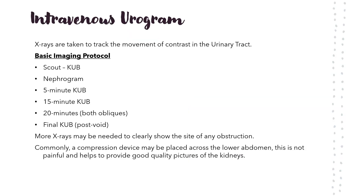For the intravenous urogram, x-rays are taken to track the movement of the contrast dye. The basic imaging protocol includes: a scout KUB, a nephrogram (individual picture of the kidneys), a 5-minute KUB, a 15-minute KUB, 20-minute obliques (RPO and LPO), and a final post-void KUB. More x-rays may be needed to show the site of any obstruction. A compression device may be placed across the lower abdomen, or the Trendelenburg position may be used.